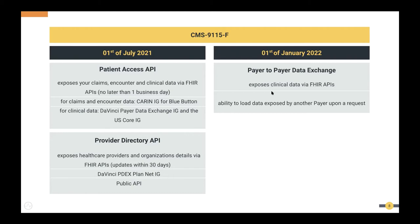There's an implementation guide for the Provider Directory API as well — the Da Vinci PDX PlanNet implementation guide. This is a public API you've been asked to expose, so that anyone can query these FHIR APIs and learn about your supported healthcare providers, facilities, hospitals, pharmacies, and more. When it comes to the Patient Access API, there are additional requirements: proper OpenID Connect OAuth security, support for SMART on FHIR specification, and requirements around consent management, which we'll cover in coming slides.